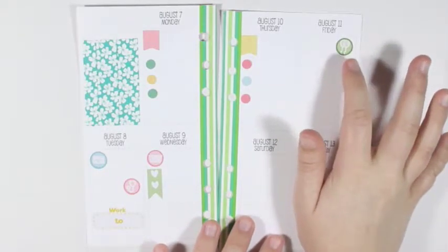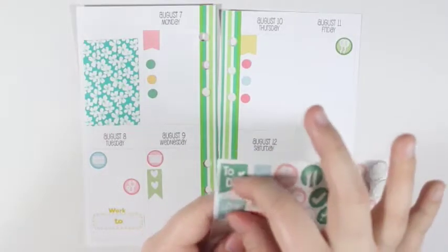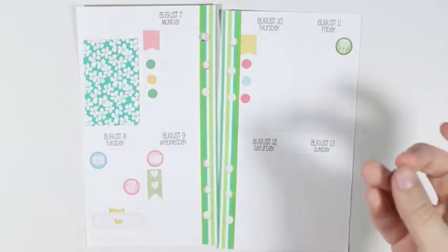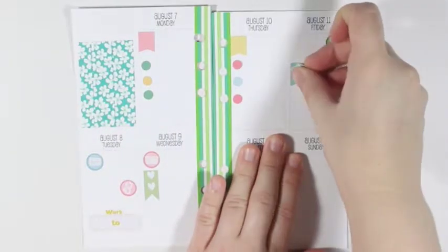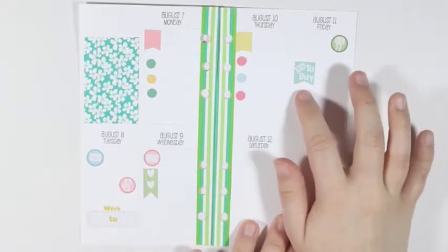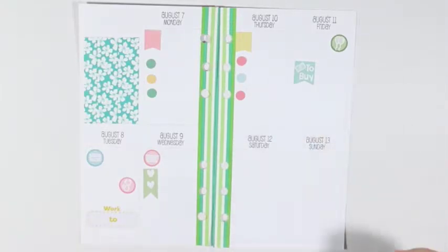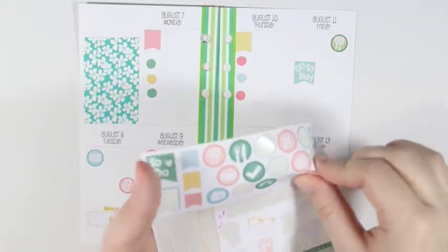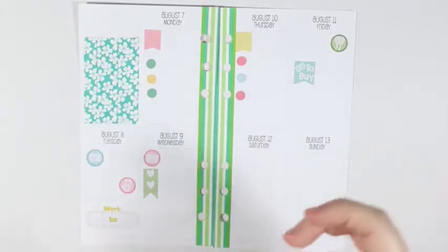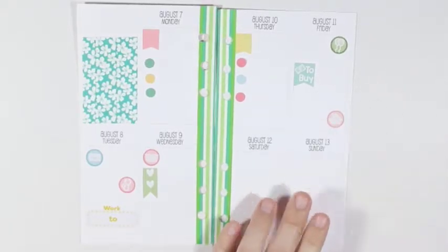So Friday I have the birthday. And then that is also our shopping day. So I am going to take the to buy flag. Put that right there. And I think I'm just going to write in the to buy list. I am going to take the house icon, the pink one. And put this down at the bottom to mark the cleaning for the house that we do on Friday.